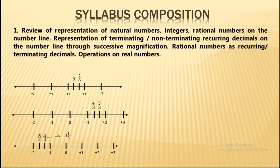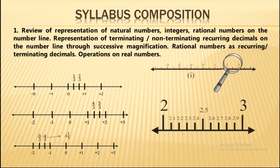Next is the representation of terminating and non-terminating recurring decimals on the number line through successive magnifications. For example, we can represent 2.56 on the number line by magnifying between 2 and 3, zooming in to locate the exact point.